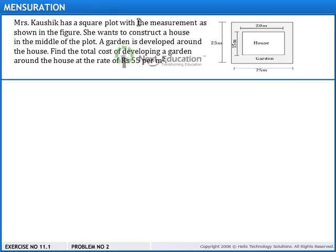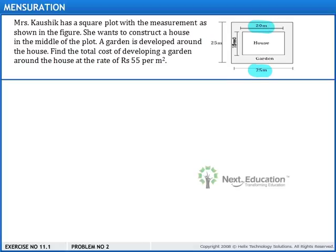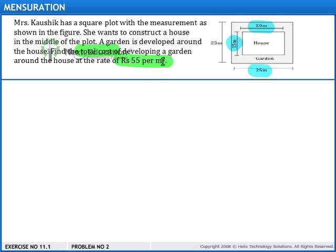Mrs. Kaushik has a square plot with measurement 25 meters and she wants to construct a house in the middle of this plot with measurements 20 meters length and 15 meters breadth. A garden is developed around this house. We need to find the total cost of developing the garden around the house at the rate of 55 rupees per meter square.